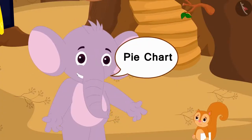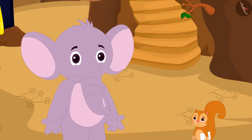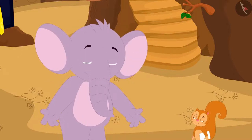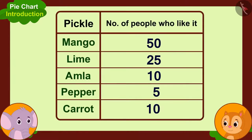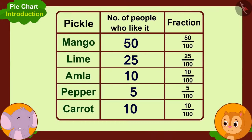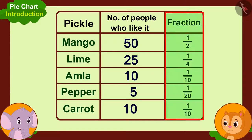Appu explains: 'Through the pie chart, we can illustrate the information in a simple way by making a circle. Let me teach you how to make it. We have got information of a hundred people in total. To make a pie chart, we will first write the number of people who like each pickle as a fraction of hundred. Like, 50 people like mango pickle, so we take it as 50 over 100, or half of hundred. In the same way, we will write different pickles liked by people as fractions of hundred.'